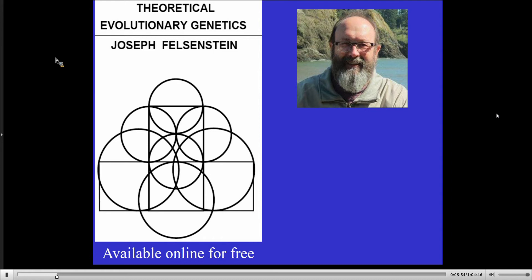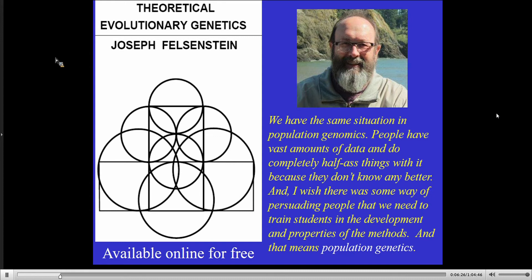As a source, there's not surprisingly not a lot of good newer books available on theoretical population genetics. There are a number of old ones, but they don't really keep up with the new data. This book by Joe Felsenstein is available online for free, and anybody who's really interested in doing population genetics, I really recommend it. Joe has his own view of population genomics: we have the same situation where people have vast amounts of data and do completely half-assed things with it because they don't know any better. He wishes there were some way of persuading people that we need to train students in the development and properties of methods — and that means population genetics theory. I agree completely with Joe.